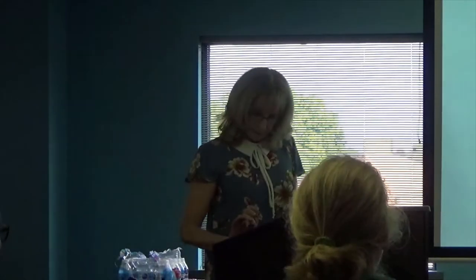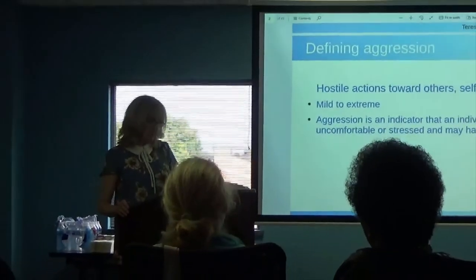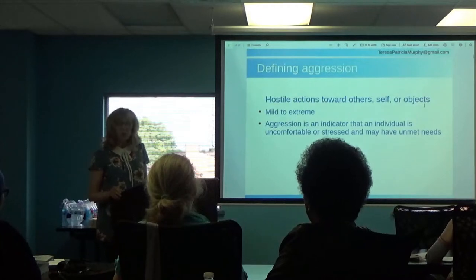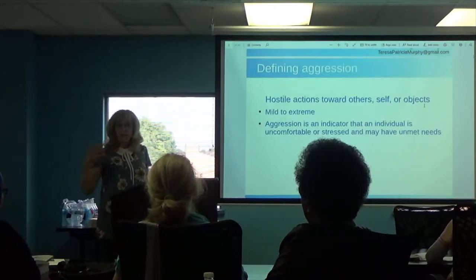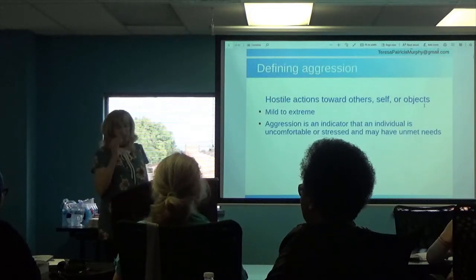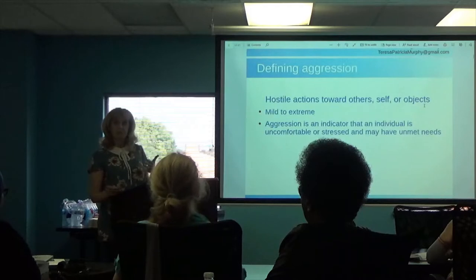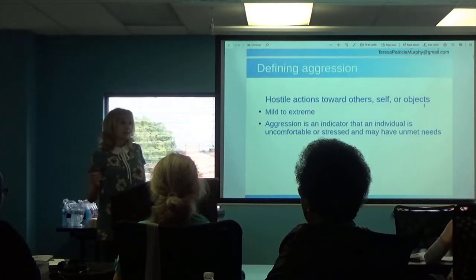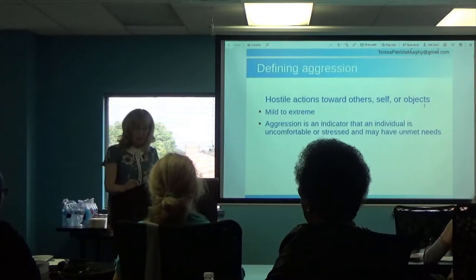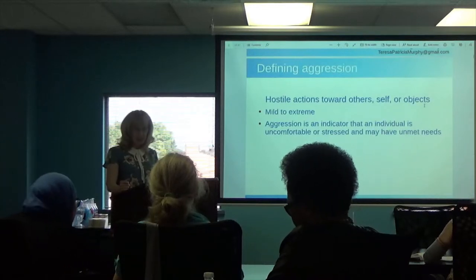We're going to start with defining aggression. Aggression really is hostile actions towards others, self, or objects. By objects, it can be walls, throwing things, turning over chairs, or anything like that. It can vary from person to person, even from environment to environment. For some people it might be very mild — just someone being in your physical space. For others, it could be the other extreme, threatening the safety of the people involved. Aggression is an indicator that the individual is uncomfortable or stressed and has unmet needs.